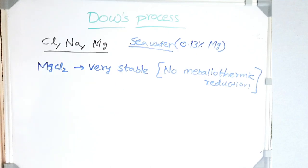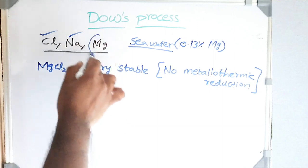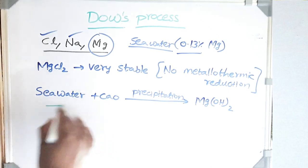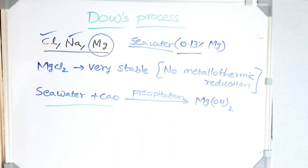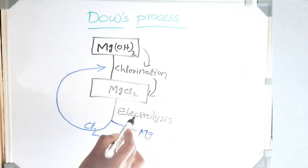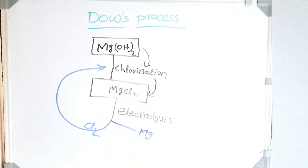The Dow process uses seawater as a source of magnesium. After chlorine and sodium, the most abundant element in seawater is magnesium — seawater consists of 0.13 weight percent magnesium in the form of magnesium chloride. We cannot produce magnesium from MgCl₂ using metallothermic reduction because MgCl₂ is very stable. Instead, we take seawater and with lime do precipitation to produce Mg(OH)₂.